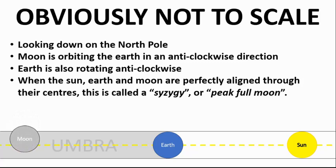Reaching that position where it's called a syzygy, where all three bodies are in perfect alignment in those two dimensions from the top down. This is also when it's peak full moon, and if those three bodies are aligned in three dimensions, then it will also be a lunar eclipse.